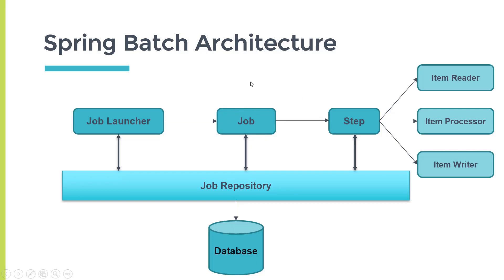Since a job can have multiple steps or a single step, the Job Repository will also hold information like when a particular step started, when it ended, and what its status is — completed or otherwise. So for each step it stores the metadata information. This information is stored inside a database — it can be any SQL database like H2 or MySQL.